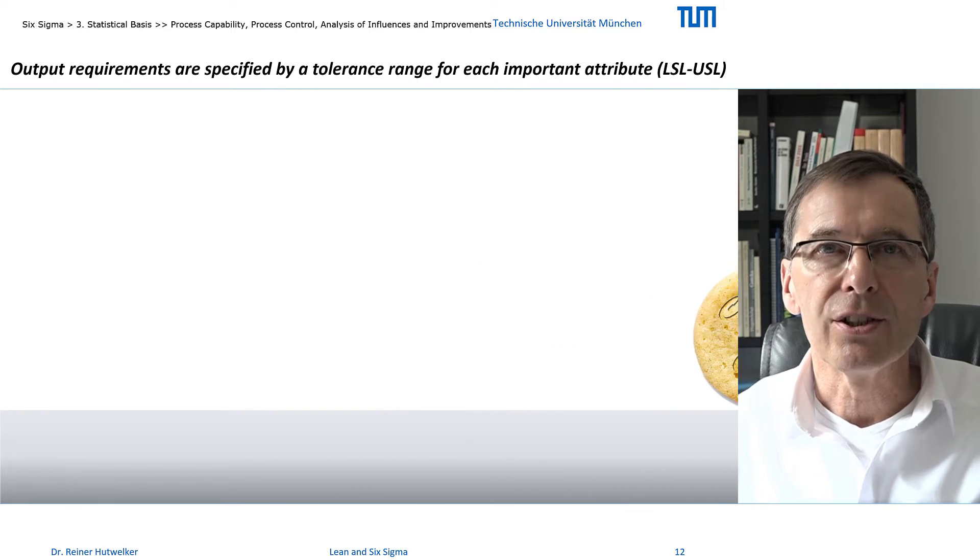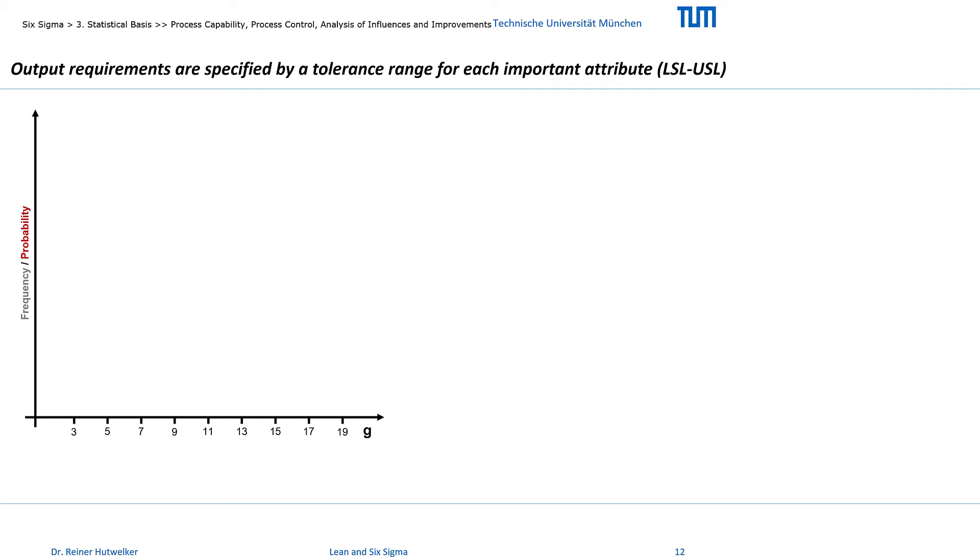What is behind this evaluation? Weight is an attribute of cookies and we promise that our cookies have an average weight of 10 grams. Of course we can't always bake exactly the same cookies. Therefore we additionally promise to keep the limits between 7 and 13 grams.